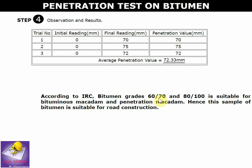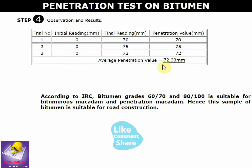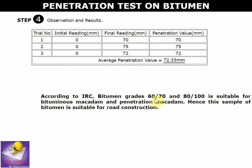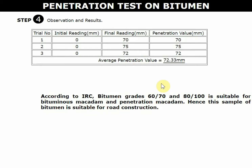The penetration value of 72 falls between the grade of 60/70 and 80/100. It is higher than the 60/70 grade and lower than the 80/100 grade, making it suitable for bituminous macadam. That's all for the penetration test on bitumen — please subscribe to the channel. Thank you for watching.